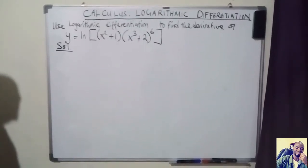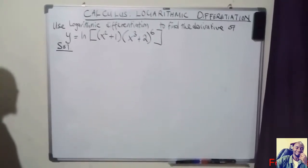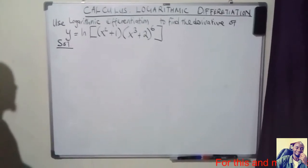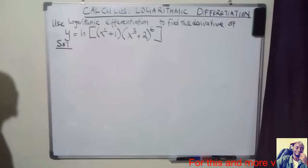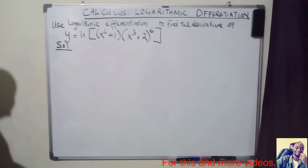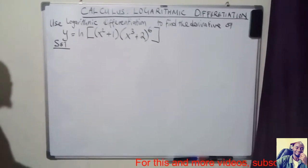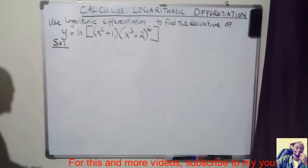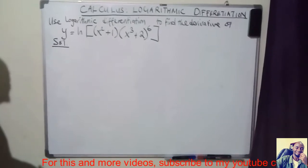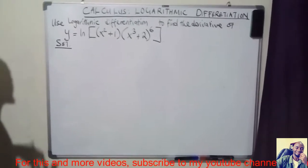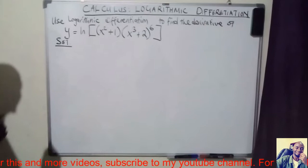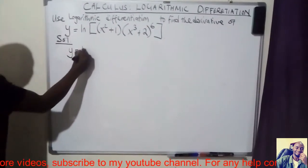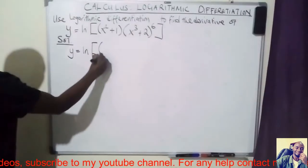In this video I want to see how we can use logarithmic differentiation to find the derivative of a function which is expressed as a product or as a quotient. The first part of it we discussed in the previous video, so I'm not going to go into details on the laws of logarithms. When you are using logarithmic differentiation, you introduce natural log on both sides.